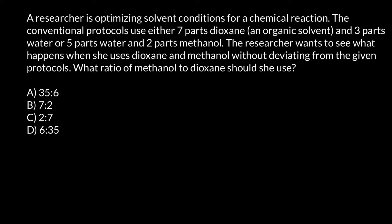A researcher is optimizing solvent conditions for a chemical reaction. The conventional protocols use either seven parts of dioxane, an organic solvent, and three parts of water, or four parts of water and two parts of methanol. The researcher wants to see what happens when she uses dioxane and methanol without deviating from the given protocols — what ratio of methanol to dioxane should she use?